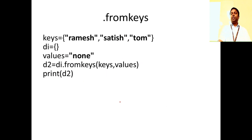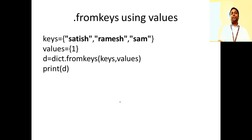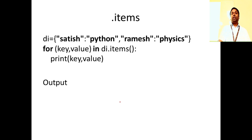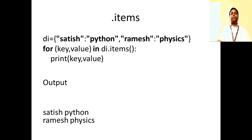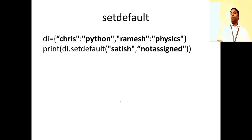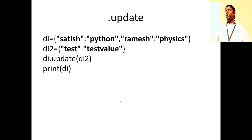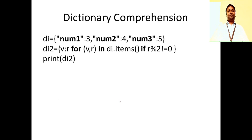dot fromkeys we have seen with an example. dot get method we have seen and how it's different from the normal approach. dot items we have seen — how to read key-value pairs and print them. dot set_default — if the key is not available, it prints a default message; if available, it prints the value. dot update — copies one dictionary and updates another.